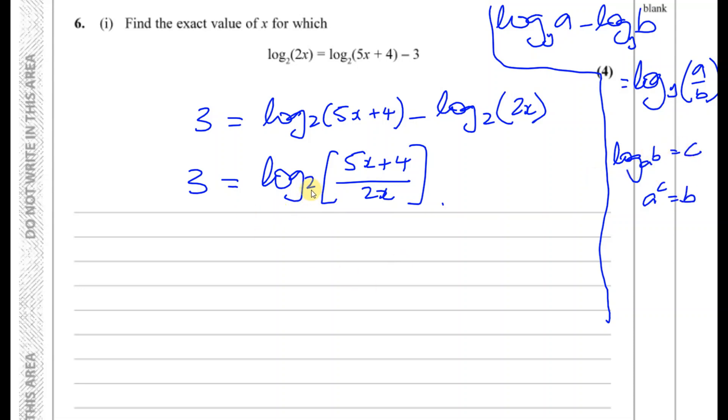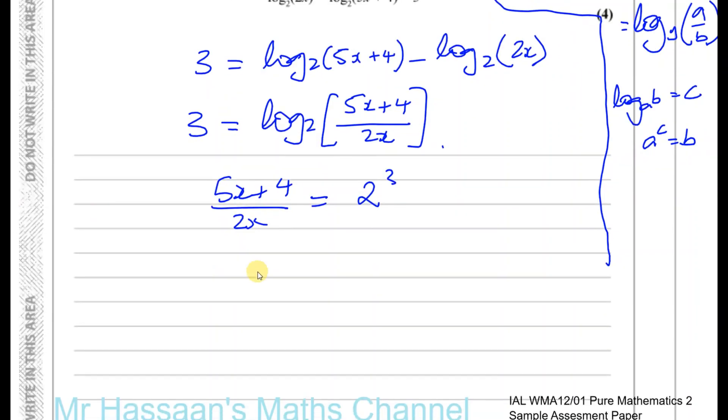So I can say this is 2 to the power of 3 equals this, so we can say 5x plus 4 divided by 2x will be the same as 2 to the power of 3, which is 2 cubed which is 8. Okay, so I end up with 5x plus 4 is equal to, that's 8 times 2x which is 16x.